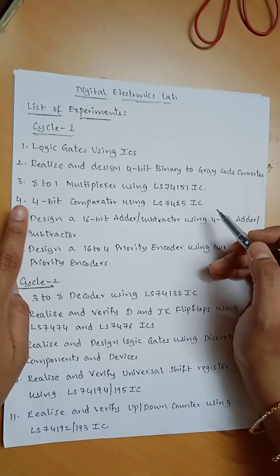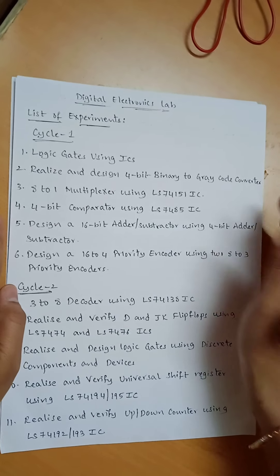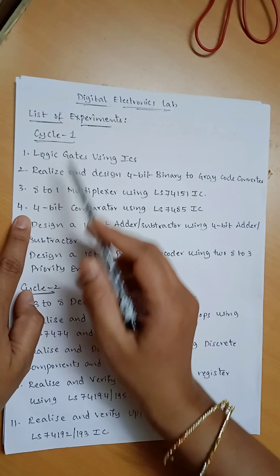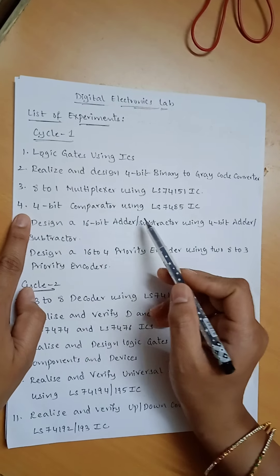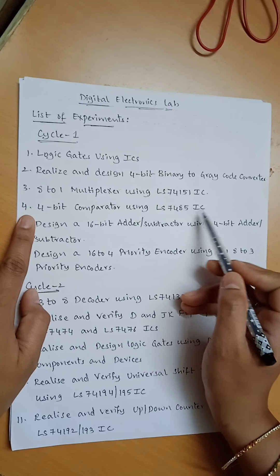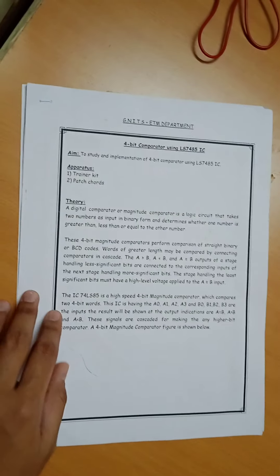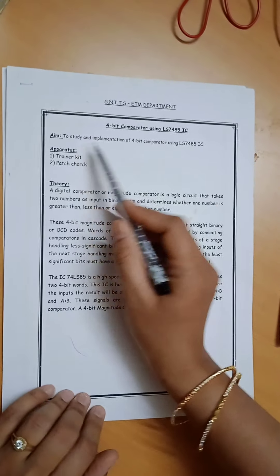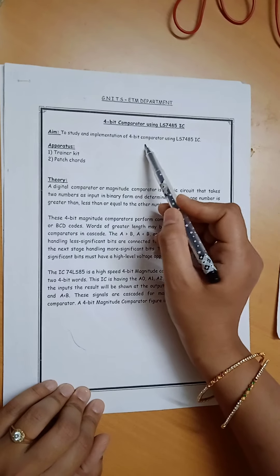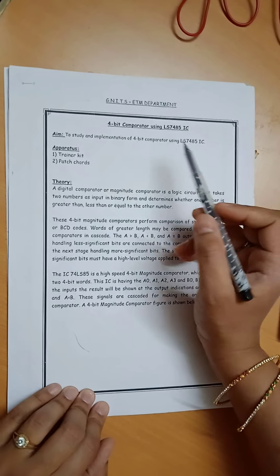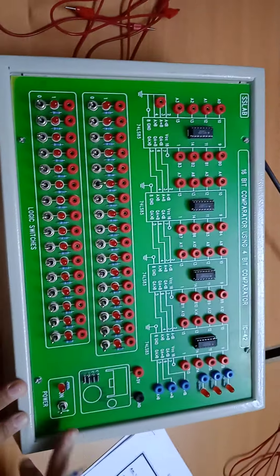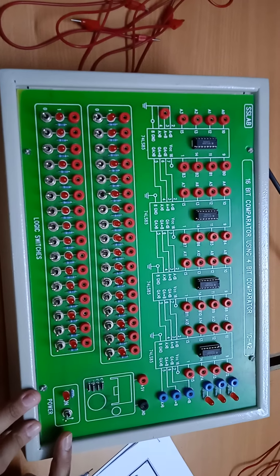Hello everyone. In this video we discuss cycle 1 experiment 4: 4-bit comparator using LS7485 IC. The aim of this experiment is to study and implement a 4-bit comparator using LS7485 IC. Apparatus required for this experiment are a trainer kit, patch cords, and power supply.